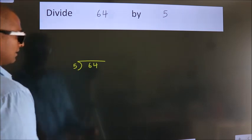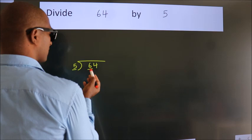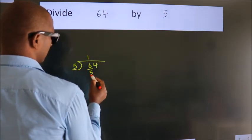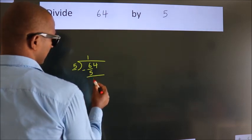Next, here we have 6, here 5. A number close to 6 in 5 table is 5 times 1 is 5. Now, we should subtract. We get 1.